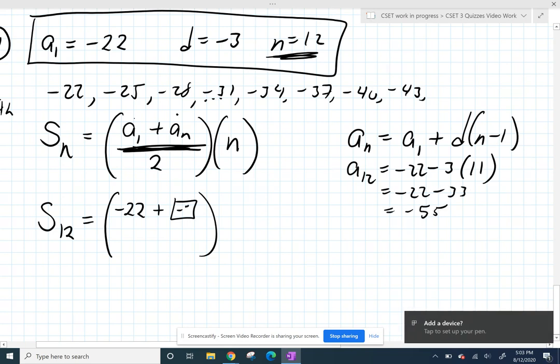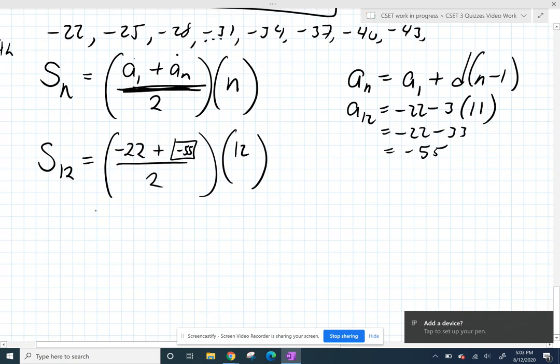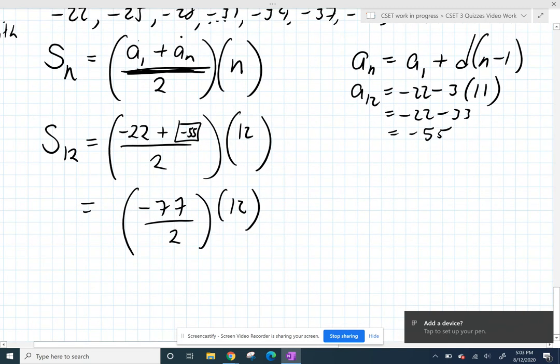So we've got negative 55, and then times the number of terms, I have 12 terms. So the average of my first term and my last term is that, and then I'm going to have 12 of those. I'm just going to reduce that and just do negative 77 times 6.